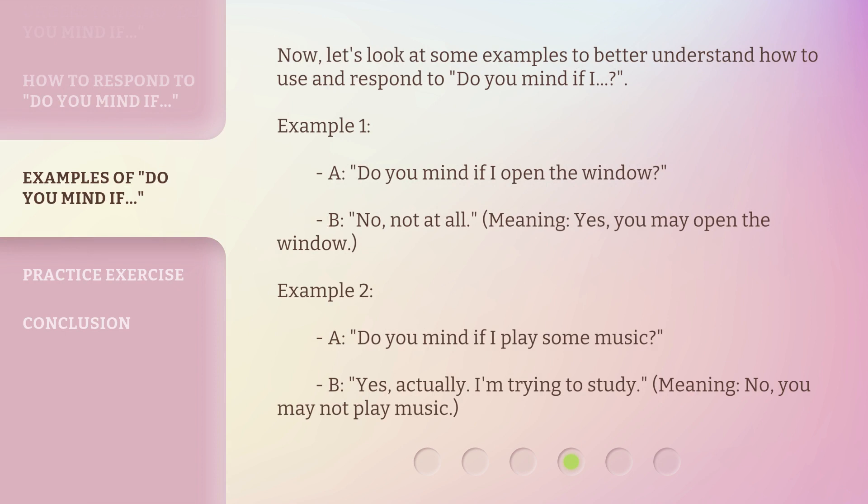Now let's look at some examples to better understand how to use and respond to 'Do you mind if I?' Example 1 — A: Do you mind if I open the window? B: No, not at all. Meaning: Yes, you may open the window. Example 2 — A: Do you mind if I play some music? B: Yes, actually, I'm trying to study. Meaning: No, you may not play music.